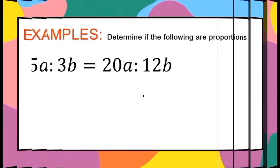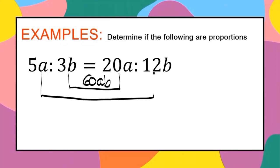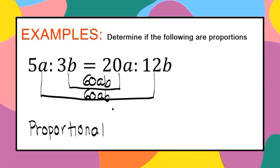Another example: 5a is to 3b equals 20a is to 12b. The product of the means: 3b times 20a equals 60ab. The product of the extremes: 5a times 12b is also 60ab. Since the products are equal, we can say this is a proportion.